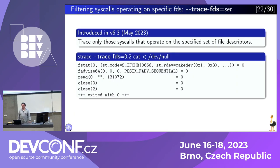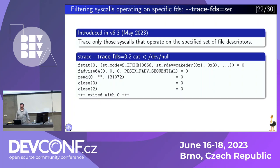You can also filter system calls by file descriptor numbers. Strace would show you just those system calls that operate on the specified set of file descriptors, as in this small program — just a regular cat program. The idea is that if you can filter by path to file, for example, there is no path at all for something like a signalfd file descriptor — it doesn't have any path. So you can use this instead.